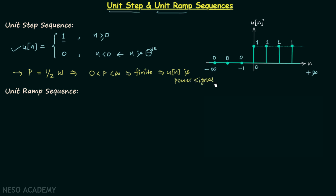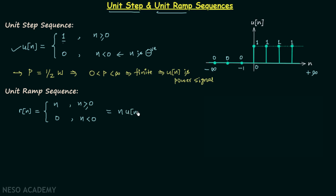Now we will move on to our next signal, that is the unit ramp sequence. Unit ramp sequence is represented by r[n] and it is equal to n for all values of n which are greater than zero, equal to n when n is equal to zero, and equal to zero for all values of n which are less than zero. If you compare the definition of r[n] and u[n], you will find r[n] is equal to n multiplied by u[n].